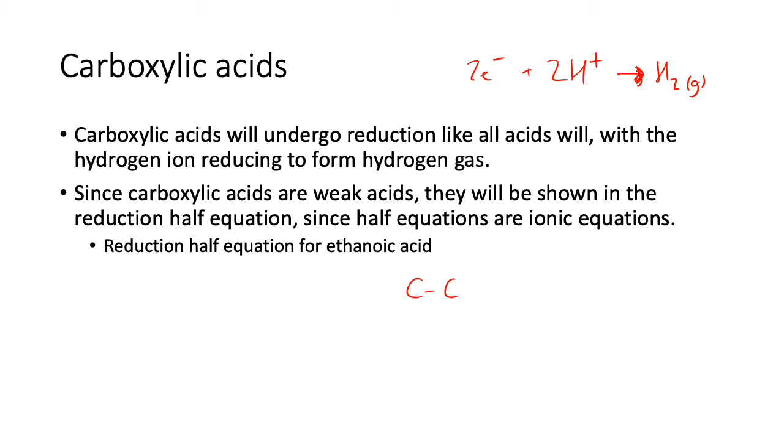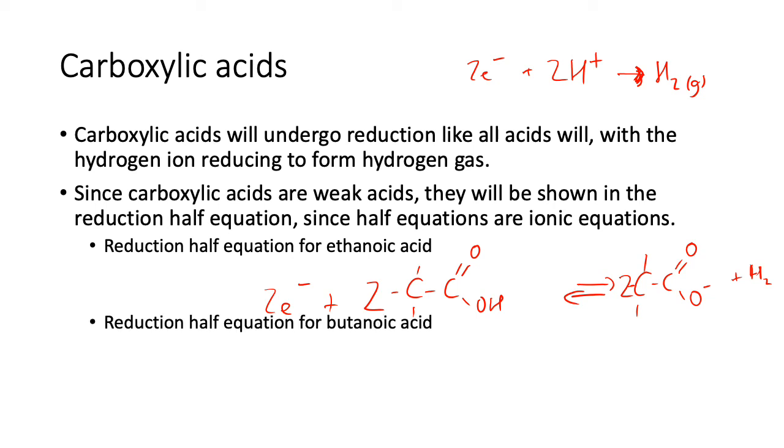For example, ethanoic acid turning into ethanoate ions plus H2 - there's two of those, two of those, and therefore I need two electrons on this side. Similar to the alcohol reduction, you have to show the thing in it. Just because it's an acid doesn't mean you can not show it in the reduction half equation and just show the hydrogen ions - because it's a weak acid, it must be shown. Don't forget the double arrows. You can try it for butanoic acid.